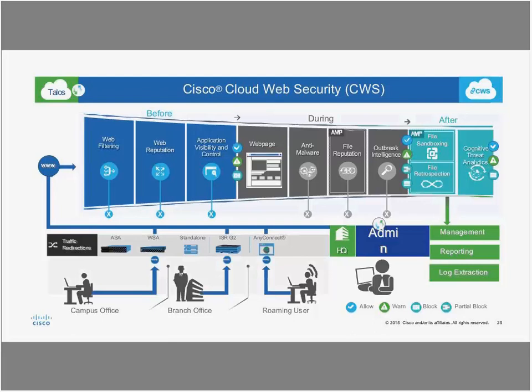Connecting through AnyConnect is not the only way to provide protection for roaming users. We actually have an SSL tunnel that connects whenever you're deployed to CWS, so you still have protection for your browser while you are away from the corporate network.